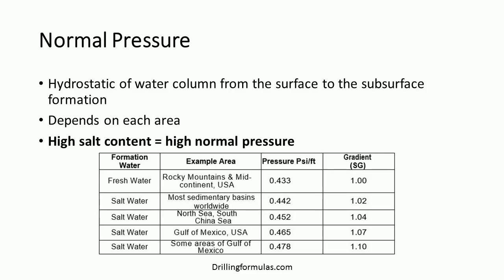The concentration of salt in water affects normal pressure. Higher salt concentration in water means higher specific gravity of water. Therefore, the normal pressure can vary from slightly saline — 0.433 psi per foot — to highly concentrated salt — 0.478 psi per foot — based on salt concentration in water.